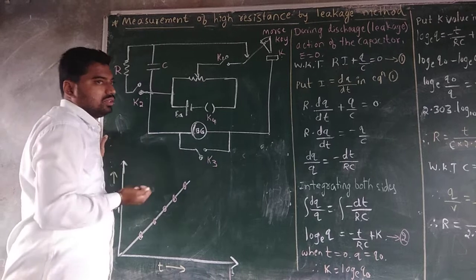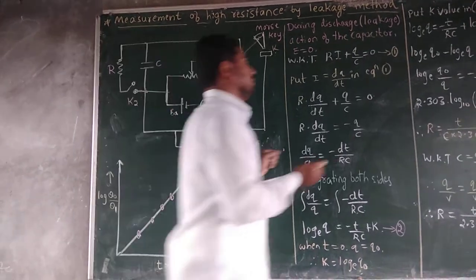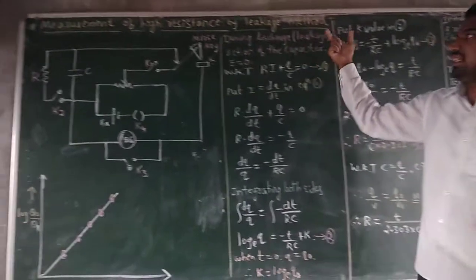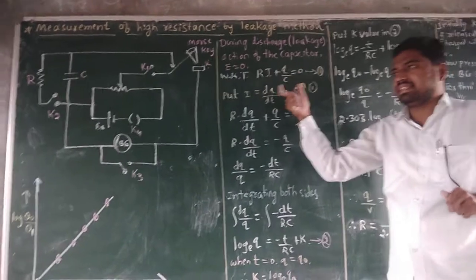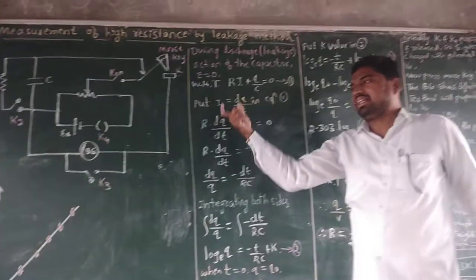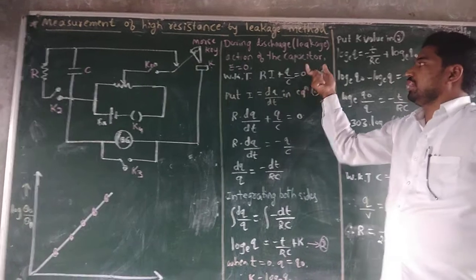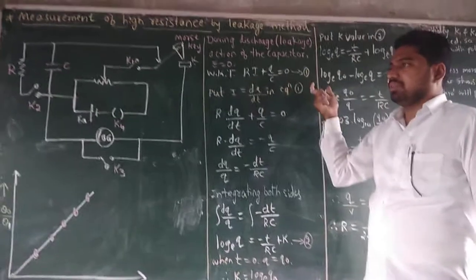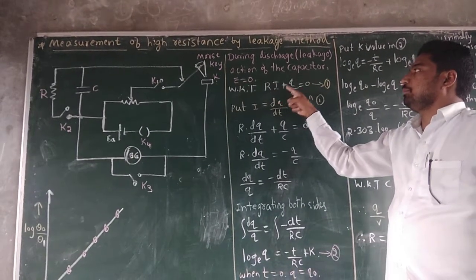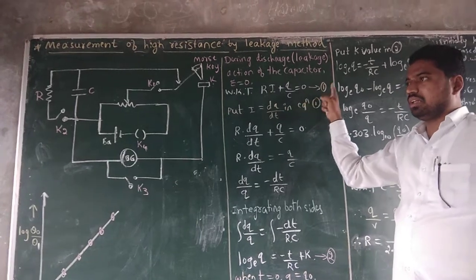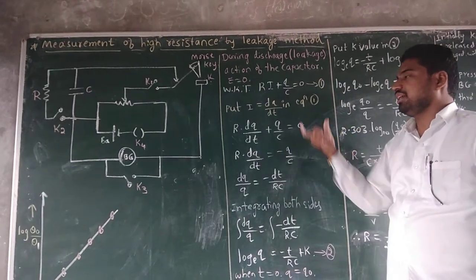Therefore e equals 0. During the discharge action of the capacitor, e equals 0. You have to know the EMF equation: e equals iR plus q by C. If e equals 0, therefore iR plus q by C equals 0. This is equation number 1.